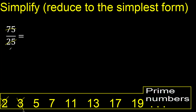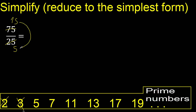Therefore, divided by 5: 75 divided by 5 is 15, and 25 divided by 5 is 5. 15 can be divided by 5, therefore 15 divided by 5 is 3.